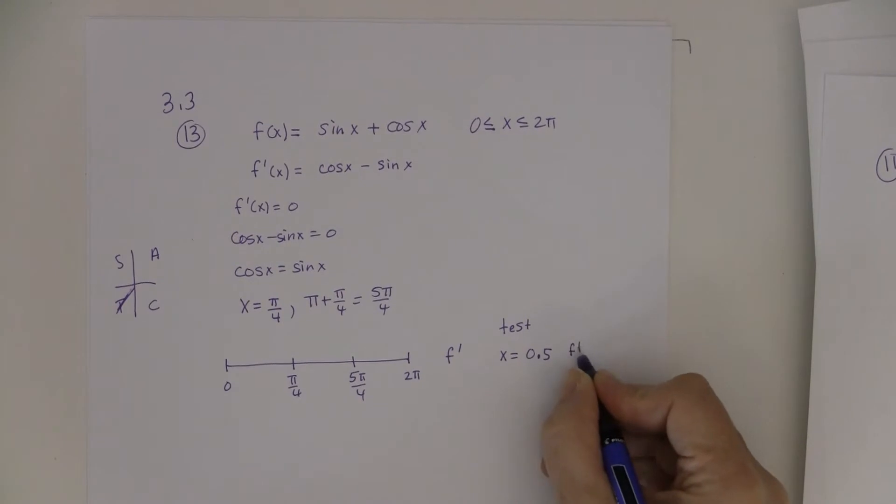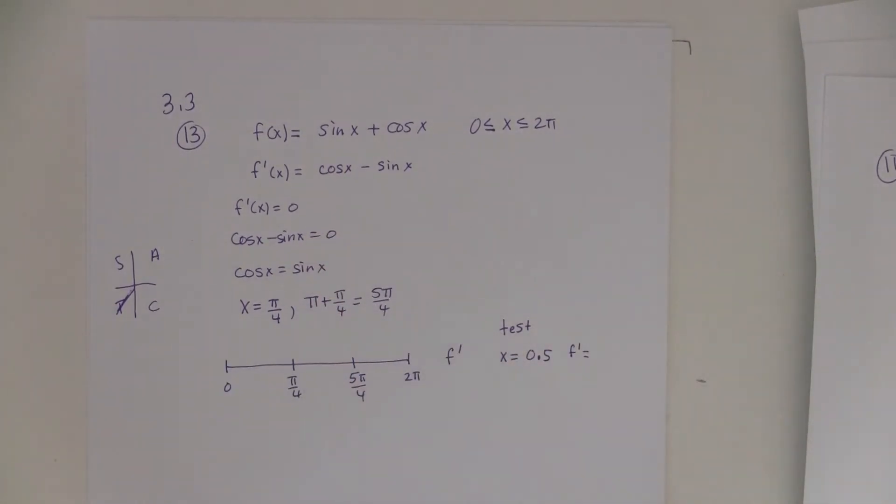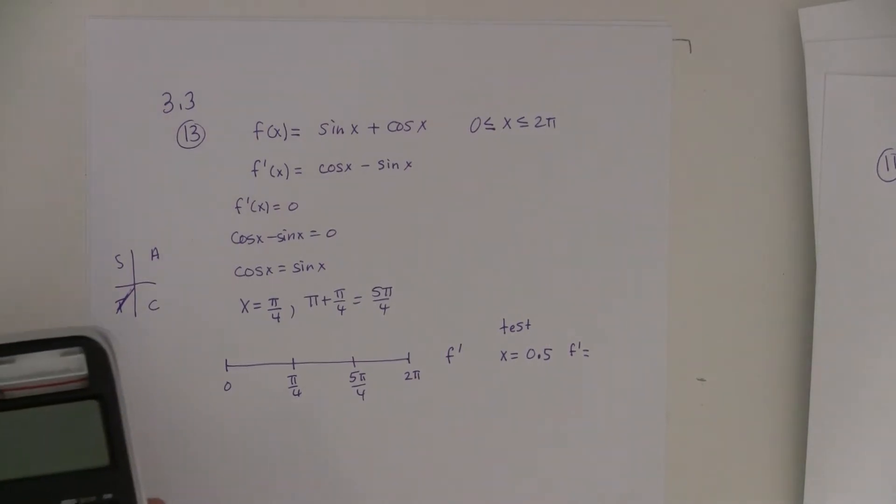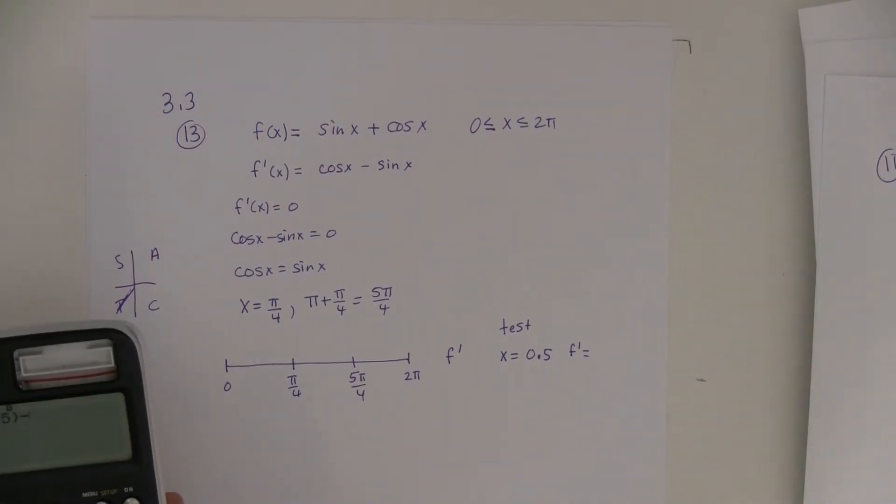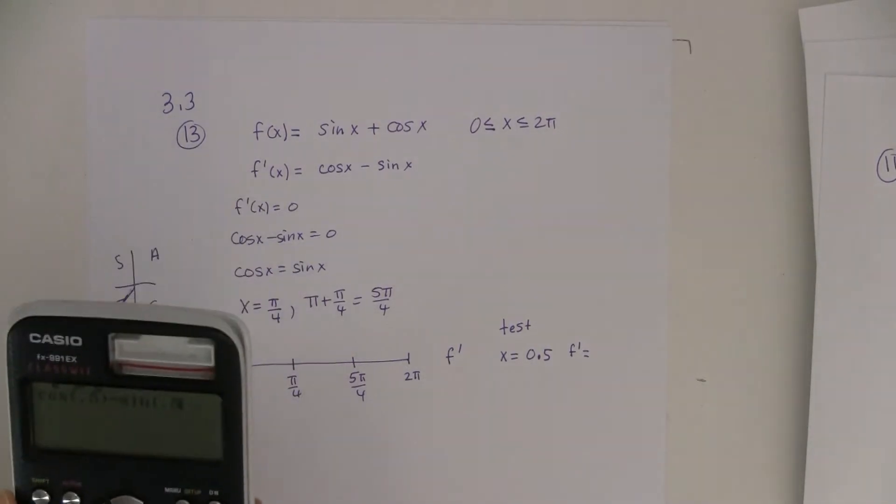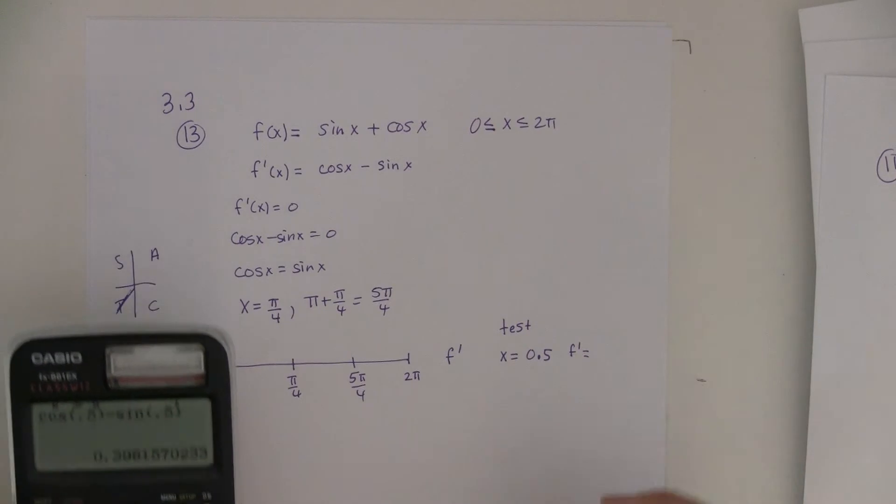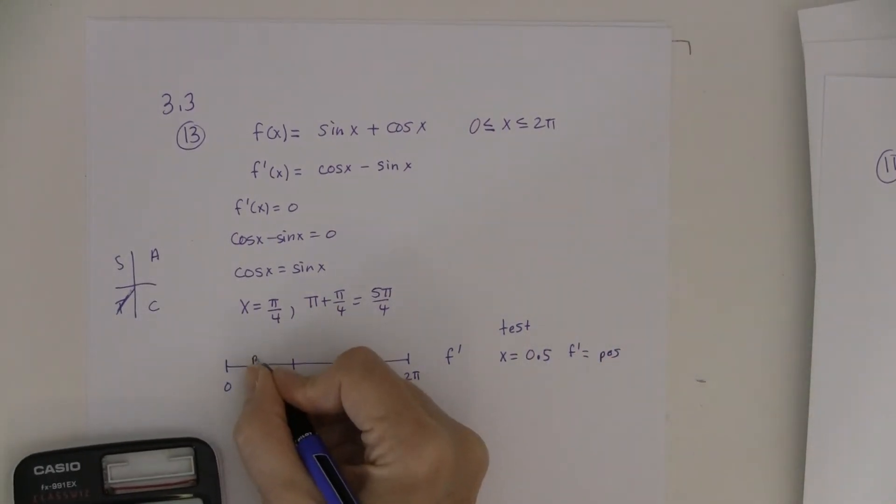And so I'm going to put this in the first derivative, which is cosine of 0.5 minus sine of 0.5. And I got my calculator in radians. So cosine of 0.5 minus sine of 0.5. And I'll look here as positive or negative. It's positive. So this is positive.